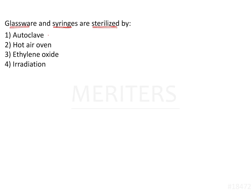Option one is autoclave. Autoclave is moist heat sterilization and it functions above 100 degrees Celsius — specifically 121 degrees Celsius for 15 minutes at 15 lbs pressure.